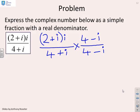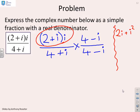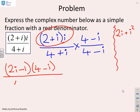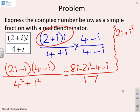As a worked example: express the given complex number with a real denominator by multiplying by the conjugate. Simplifying (2 + i)·i gives 2i + i² = 2i − 1. Then (2i − 1)(4 − i) divided by (4 + i)(4 − i) = 4² + 1² = 17. Expanding the numerator: 2i×4 = 8i, 2i×(−i) = −2i² = 2, (−1)×4 = −4, (−1)×i = −i, all over 17.